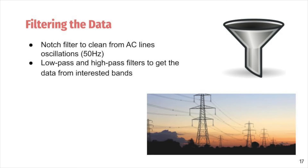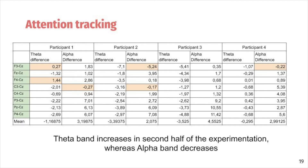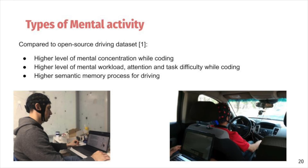Then I performed results and analysis. I found out that in the second half of each recording, the theta band tends to increase whereas the alpha band decreases. A higher difference between theta and alpha across halves of the recordings means a higher level of mental workload, attention, and task difficulty. Compared to an open-source driving dataset, I found that theta band for both programming and driving is higher than alpha relative to other bands — a signal of a higher level of mental concentration. For programming, the difference between theta and alpha is much higher than for driving, meaning higher mental workload, attention, and task difficulty. The value of the upper alpha band relative to other values is higher for driving than for programming, which is a signal of higher semantic memory processing.